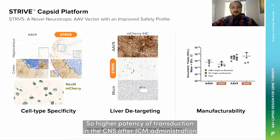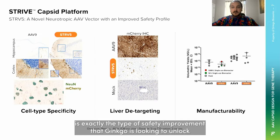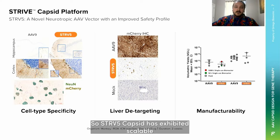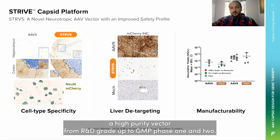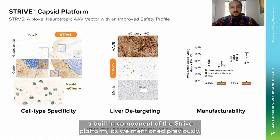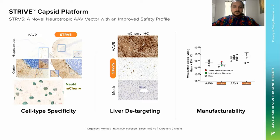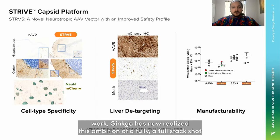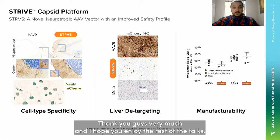Higher potency of transduction in the CNS after ICM administration, coupled with lower transduction in the liver, is exactly the type of safety improvement that Ginkgo is looking to unlock through the refinement of Strive 5's capsids. Last and certainly not least is manufacturability: Strive 5 has exhibited scalable manufacturing with over ten transgenes and has produced a high purity vector from R&D grade up to GMP phase 1 and 2. The selection of high-yielding capsids is a built-in component of the Stride platform, and these efforts complement Ginkgo's successes in engineering the other components of AAV production and its manufacturing systems. With this acquisition and continuation of the spirit of Stride Bio's work, Ginkgo has now realized its ambition of a full-stack solution for AAV gene therapy from capsid and transgene through manufacturing. Thank you very much and I hope you enjoy the rest of the talks.